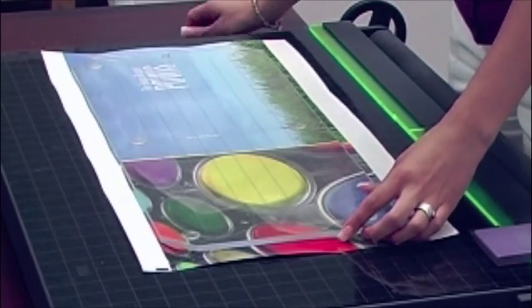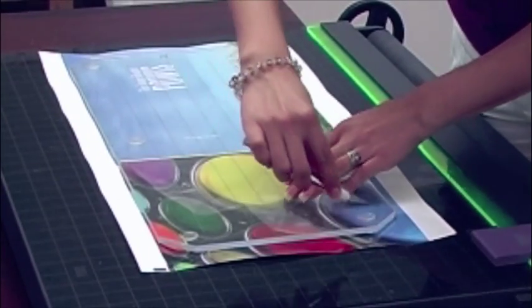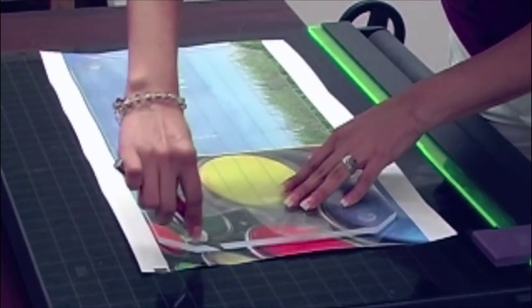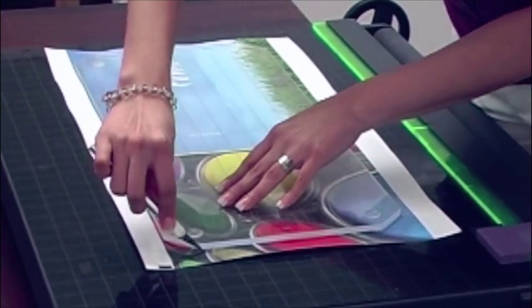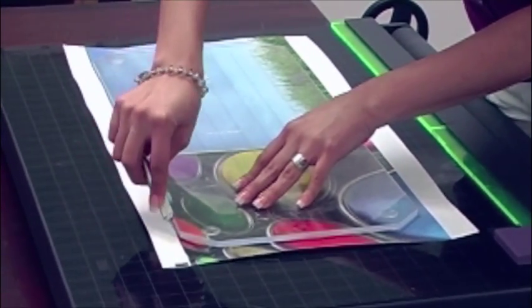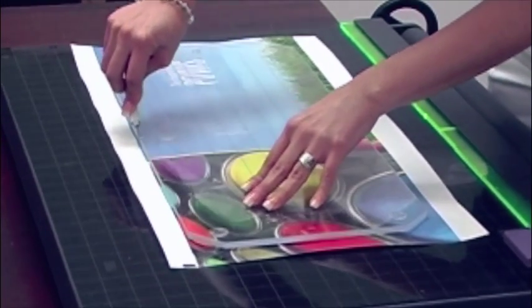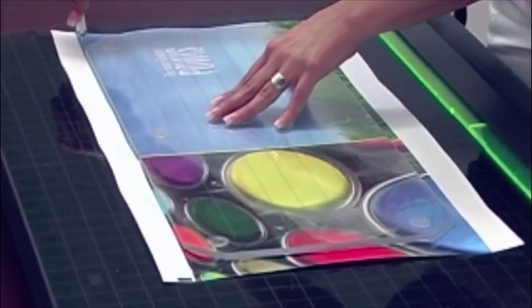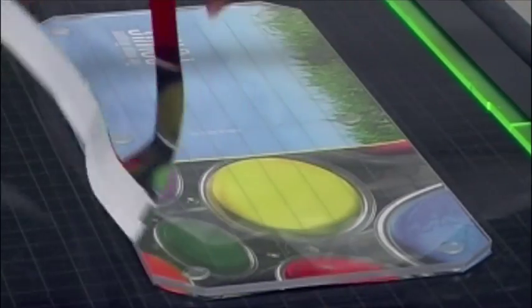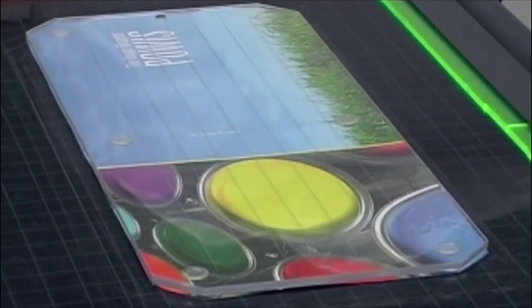Using a sharp utility knife, cut around the edges of the template, careful not to cut yourself. Remove excess paper from the edges of the wrap.